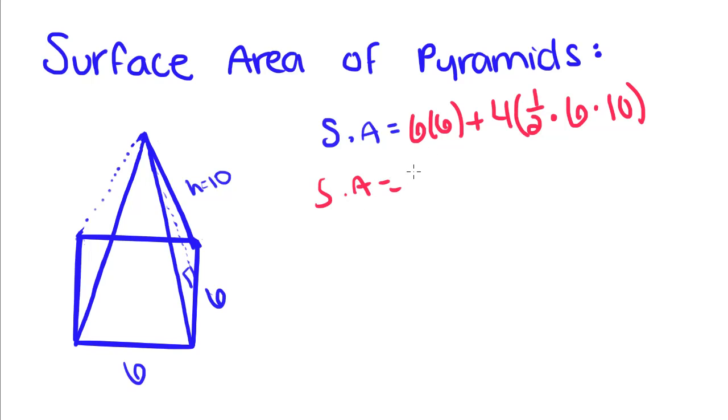Surface area equals: 6 times 6 is 36, plus one-half times 6 is 3, times 10 is 30, times 4 is 120. If you add these two together, you get 156. Pretend these were in centimeters, so it's 156 centimeters squared.